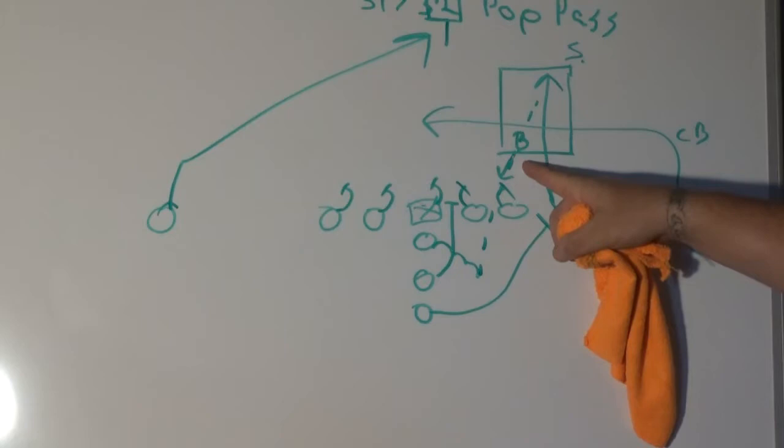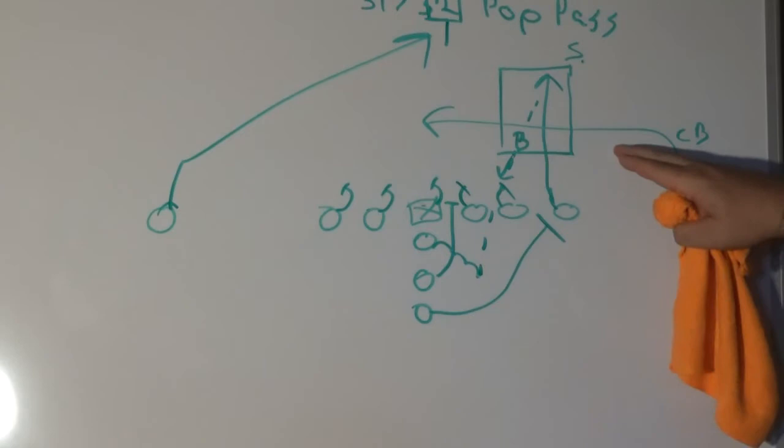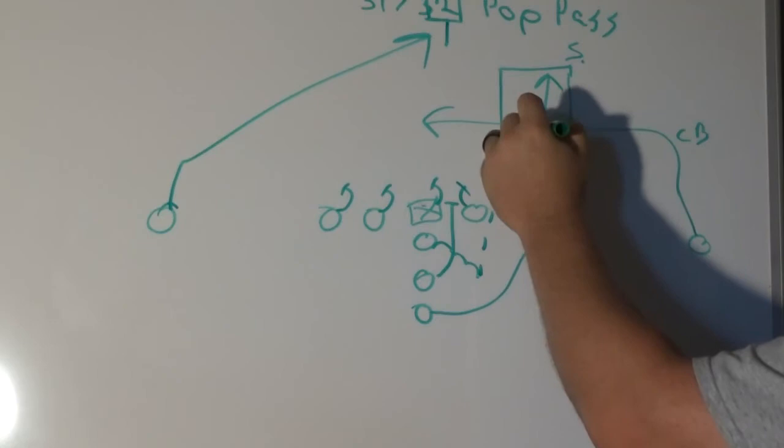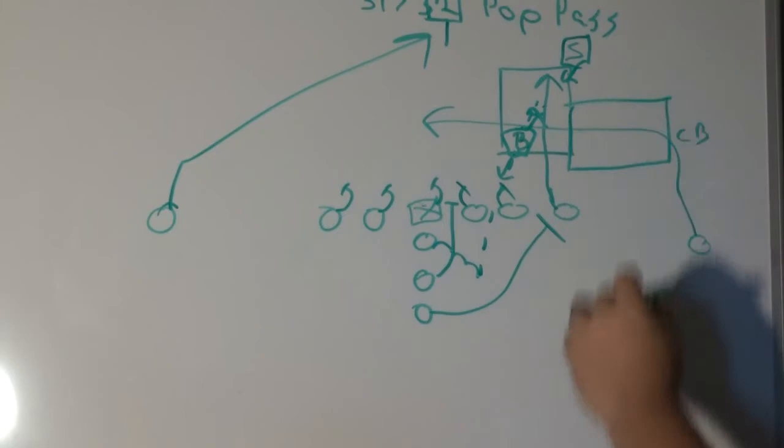If this linebacker, let's say he does not, let's say he just stays right here and runs with the tight end, well then obviously we can't throw to him. Our second read would be looking for this guy running the drag because if this linebacker is occupied here with this, if the tight end has this linebacker and this safety both occupied here watching him, that means there's going to be a zone right here that is open.